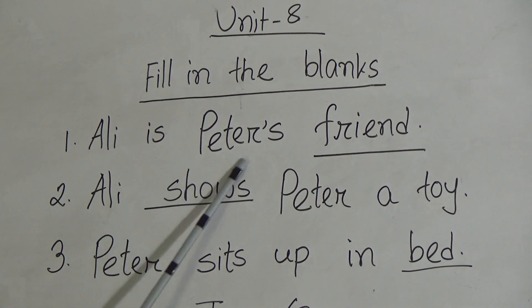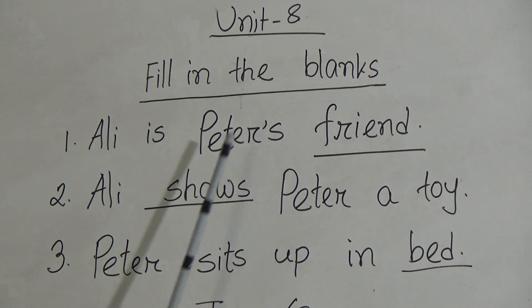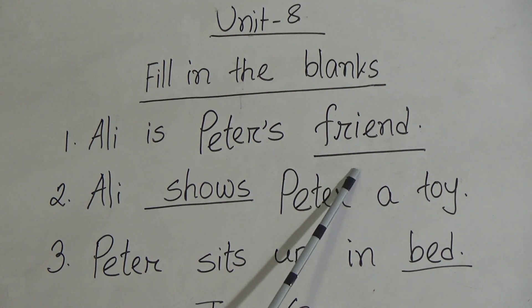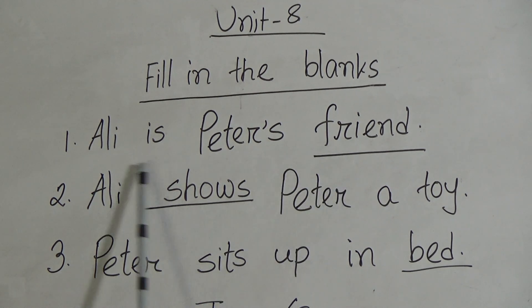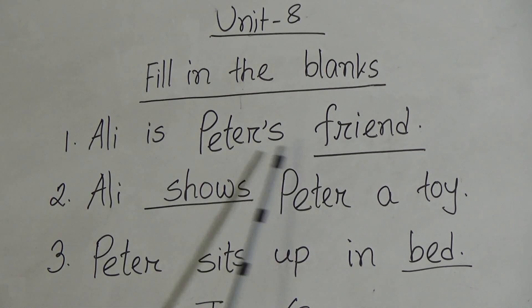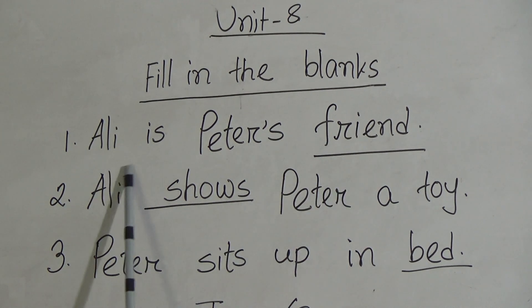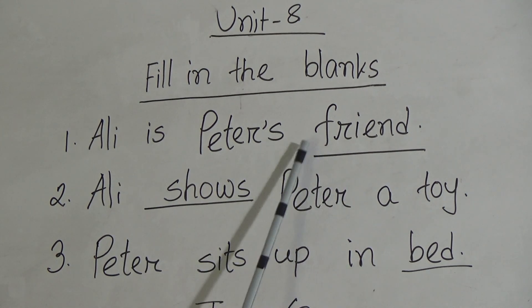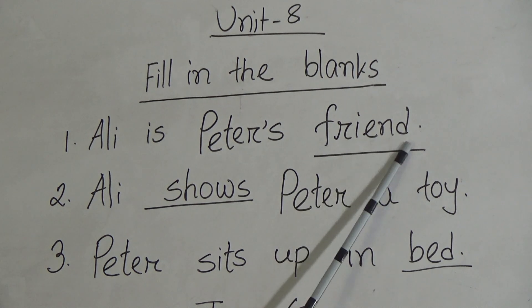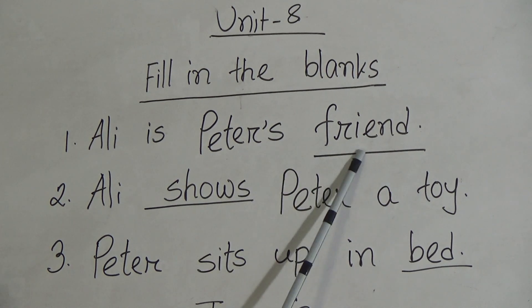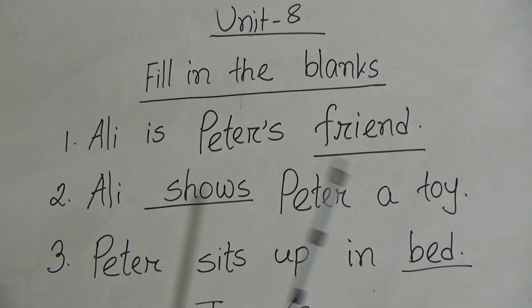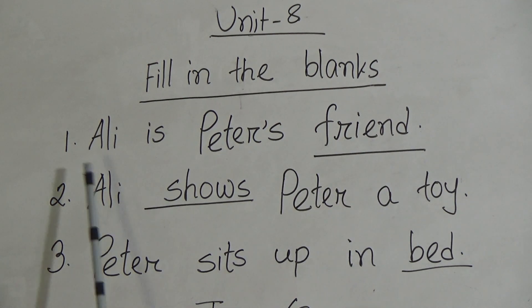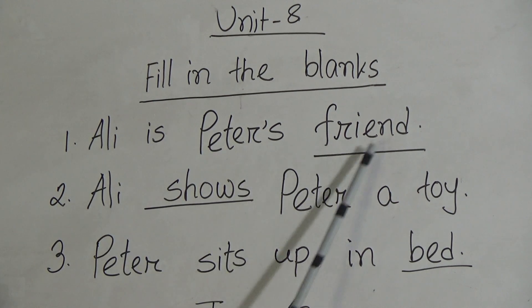Ali is Peter's dash. The correct word is 'friend.' Ali is Peter's friend. F-R-I-E-N-D, friend.